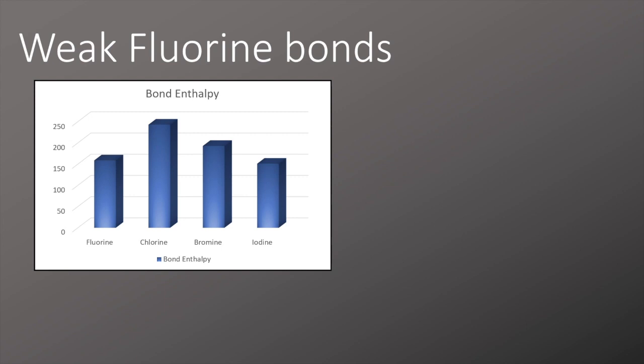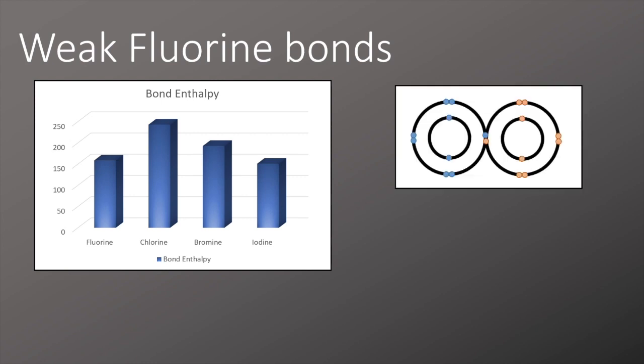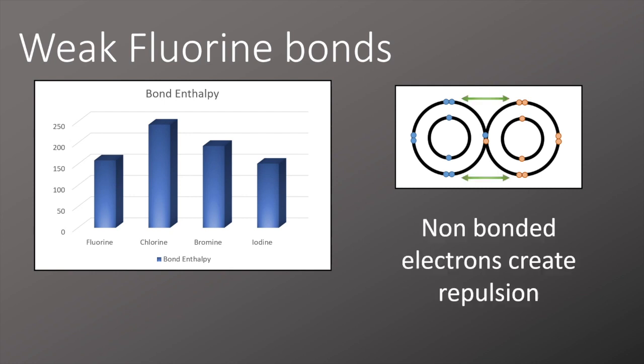We can see a decreasing trend in the strength of the covalent bonds between diatomic molecules, however fluorine stands out as being unusually weak. This is due to the close proximity of non-bonded electrons, and these non-bonded electrons repel each other weakening the bond further.